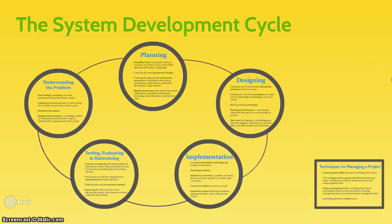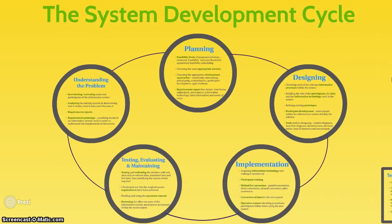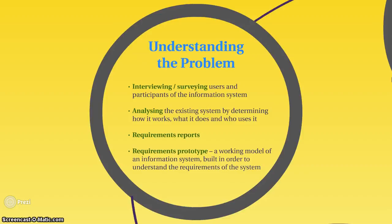The first stage is understanding the problem. We have to fully understand what exists in the current system. This means interviewing and surveying participants who use the current system, analyzing how that system works, conducting a requirements report, looking at what parts of the system need to exist in a new system, and sometimes making a requirements prototype — a similar system we can modify to better understand what's already working.